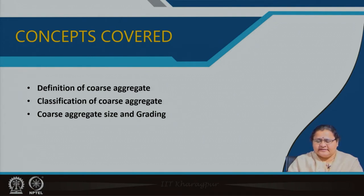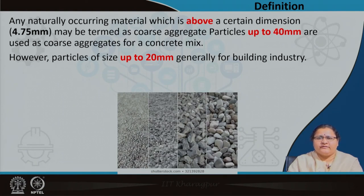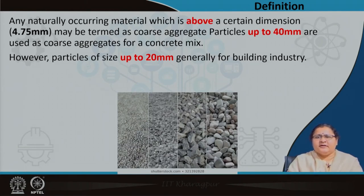We had already discussed that particle sizes below 4.75 millimeter are considered fine aggregates. Going further down, around 0.15 millimeter sieve size, anything passing through that is considered clay, which is not good quality sand if present in high percentage because it does not allow proper mixing or binding with the coarse aggregate. So particle sizes above this threshold are considered coarse aggregates.